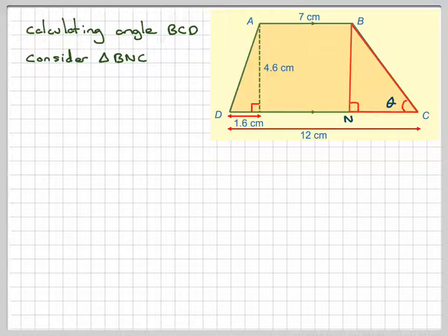So I'm going to consider that triangle. That's the angle I need to find. I know this is 4.6 centimetres. What I need to do is calculate this length here with all the information I have.